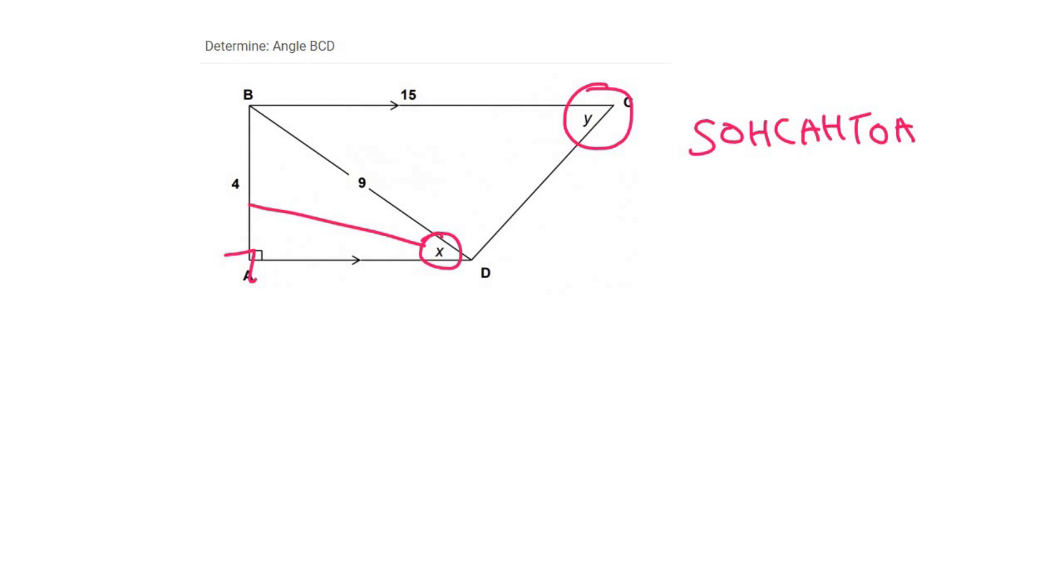So relative to this angle, I have the opposite and I have the hypotenuse. So that is sin. So I can say sin x should be the same as 4 over 9.